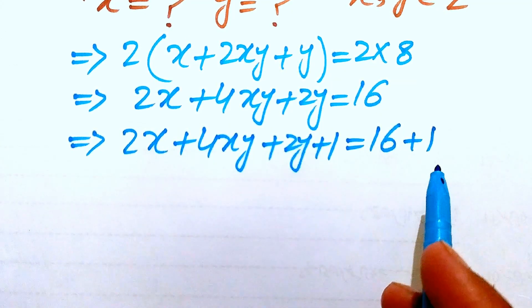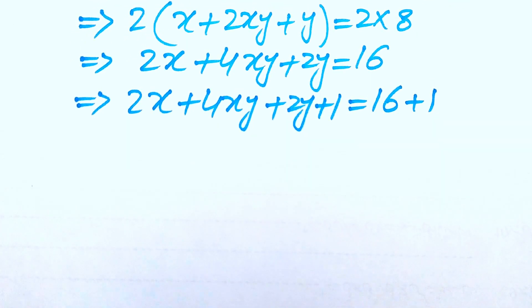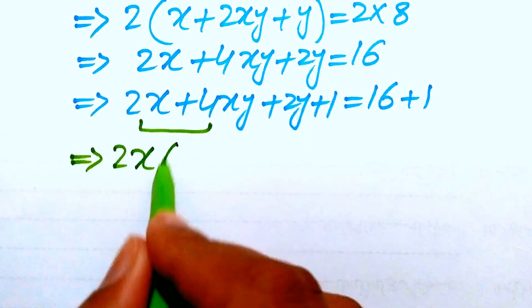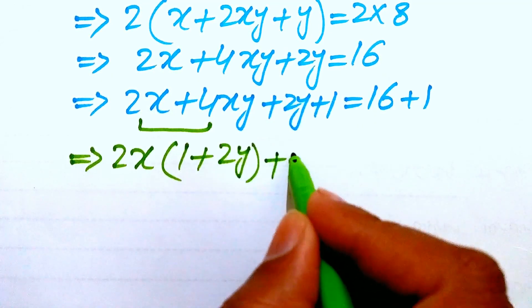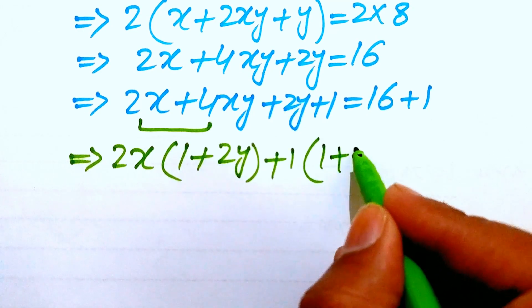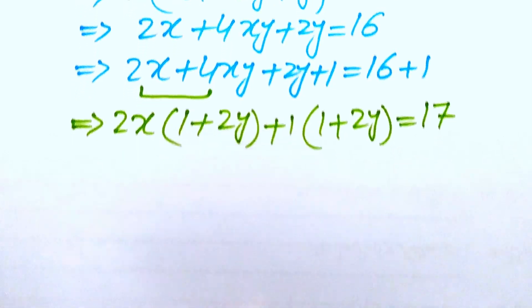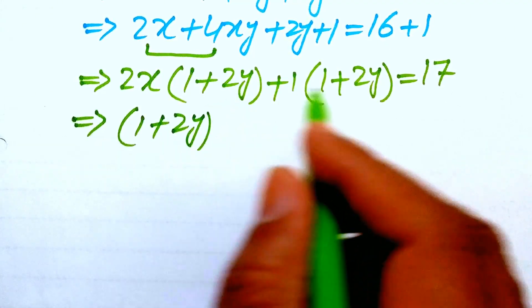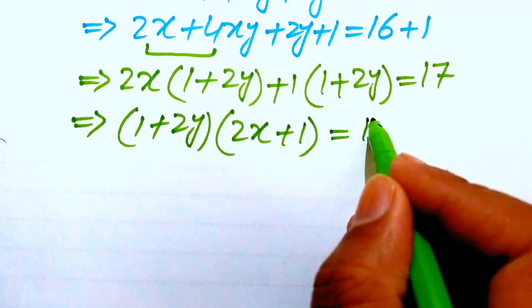Now we factor this equation. Focusing on the first two terms, 2x is the common factor, giving 2x times (1 plus 2y). Then taking out (1 plus 2y) as a common factor from the remaining terms as well, the full expression becomes (1 plus 2y)(2x plus 1) equals 17.